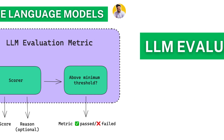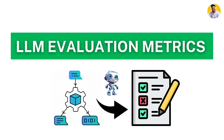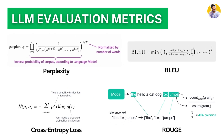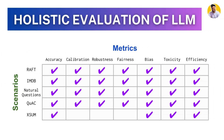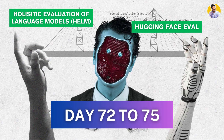What kind of metrics do we use to evaluate large language models? Metrics like perplexity, BLEU score, cross-entropy loss, ROUGE score, along with the OpenAI evaluation framework that is already available in the market. There is also a very interesting research paper called Holistic Evaluation of Language Models, which is the most advanced evaluation framework, and I explain it in detail across the last four videos from Day 72 to Day 75.